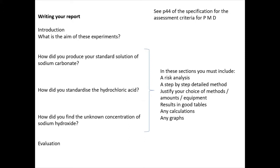I'm going to talk about writing up the report now. If you want to know what the specification says, the criteria for pass, merit and distinction are on page 44. Your teacher should share with you what those criteria are — they're allowed to do that — but they're on page 44 of the specification if you want to have a look.